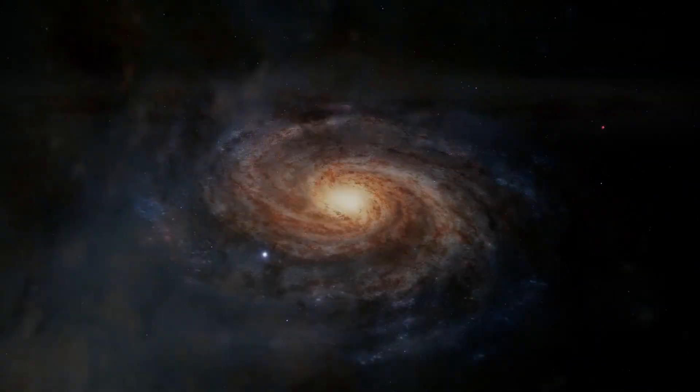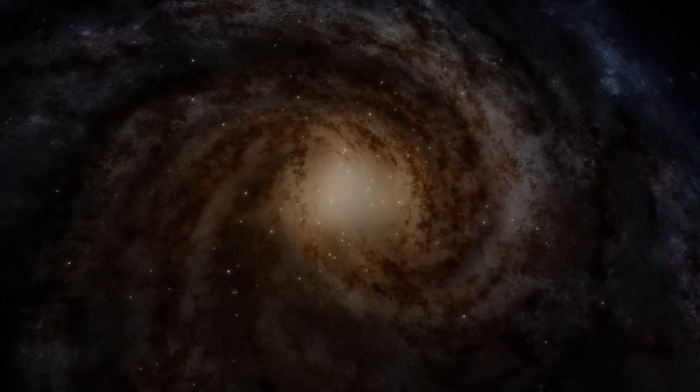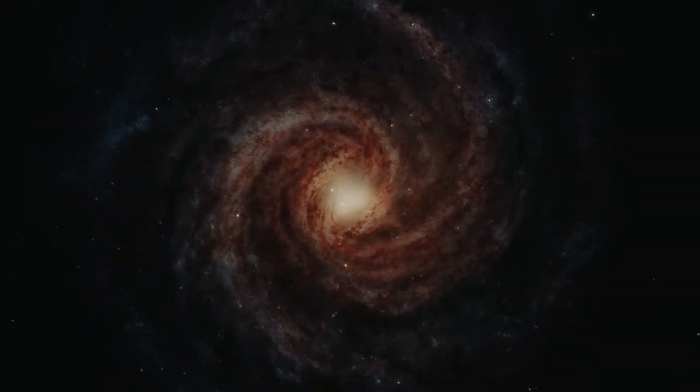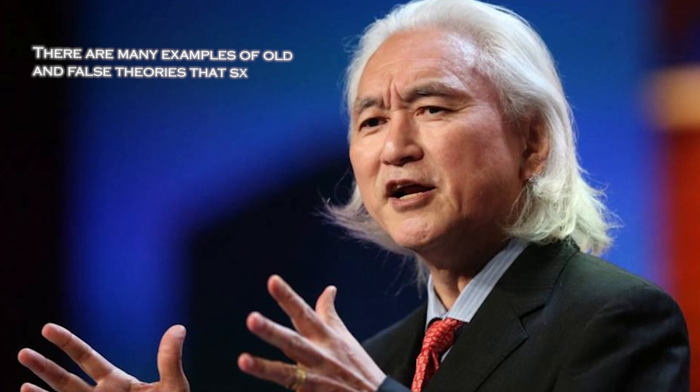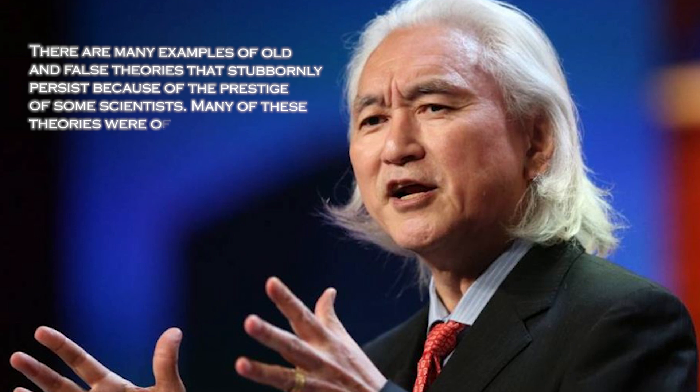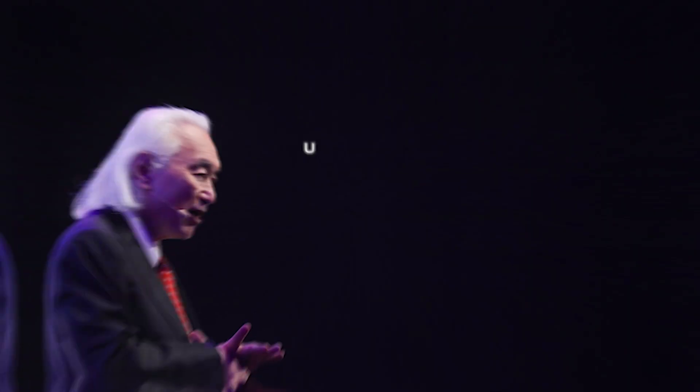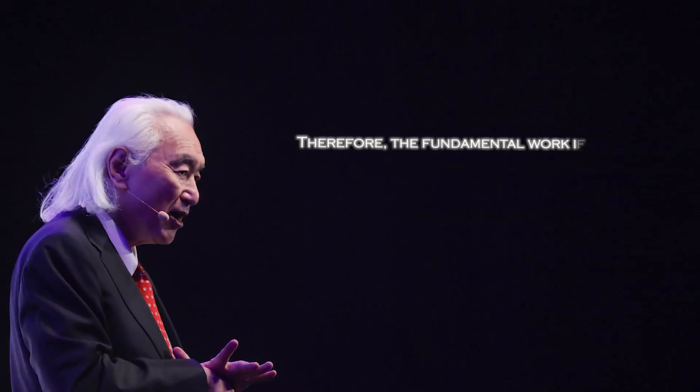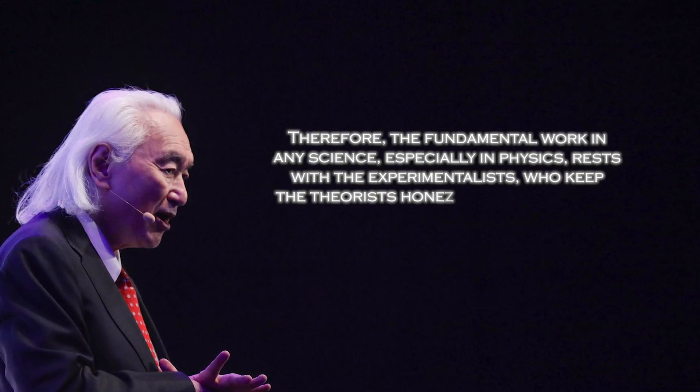This circumstance is difficult to accept for conservative science, which still finds problems with this model, and some branches of physics vehemently refuse to accept this discovery and question possible errors in the age calculations. Michio Kaku was aware of this and had this to say: there are many examples of old and false theories that stubbornly persist because of the prestige of some scientists. Many of these theories were only discredited when a crucial experiment revealed their falsity. Therefore, the fundamental work in any science, especially in physics, rests with the experimentalists, who keep the theorists honest.